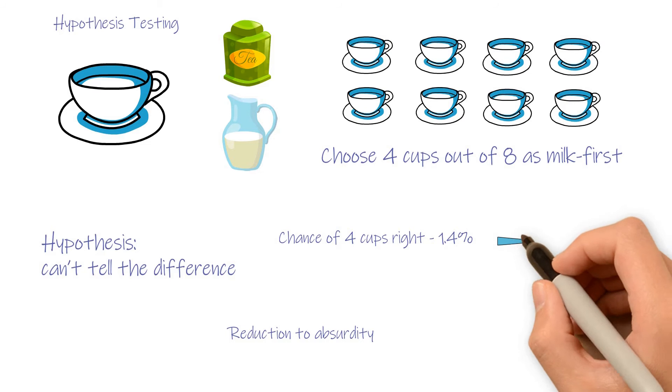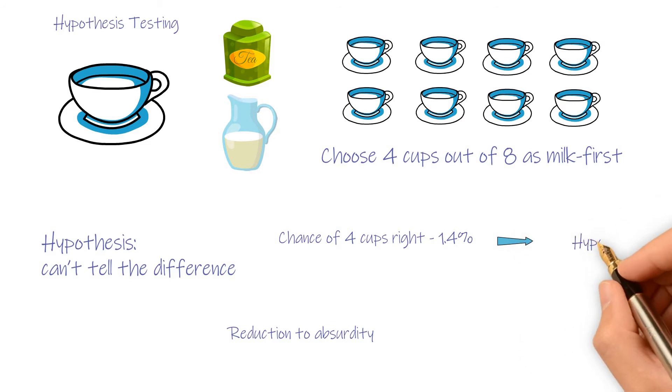It is only 1.4% can randomly choose all 4 cups right. So we will choose the opposite conclusion.